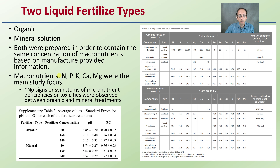Macronutrients — nitrogen, phosphorus, potassium, calcium, and magnesium — were the main focus of the study. No signs or symptoms of micronutrient deficiencies or toxicities were observed between the organic and mineral treatments.